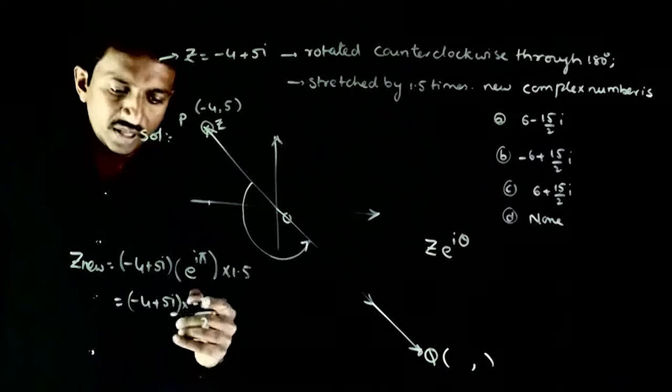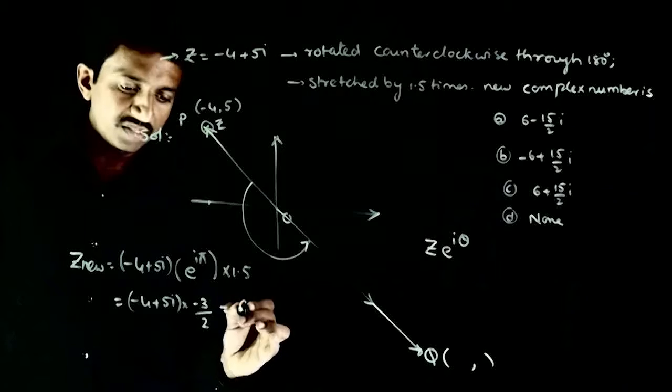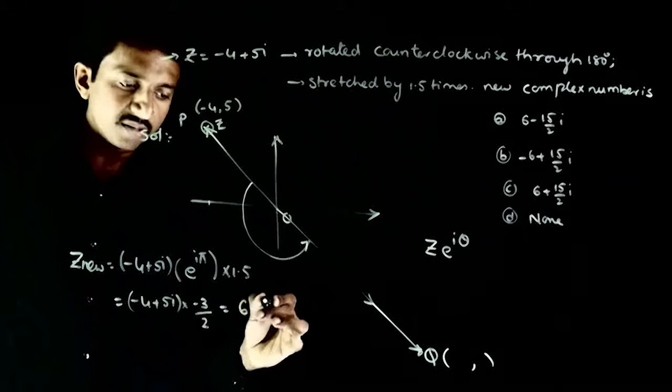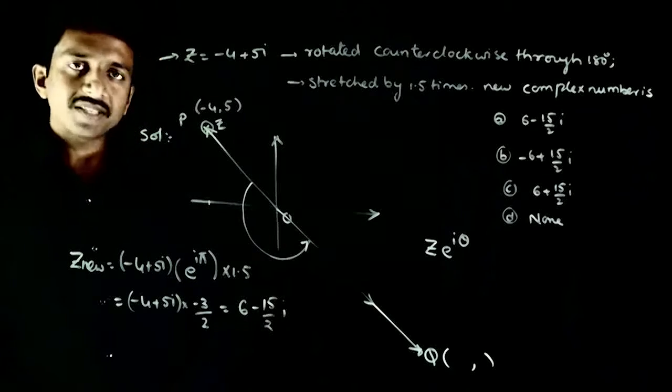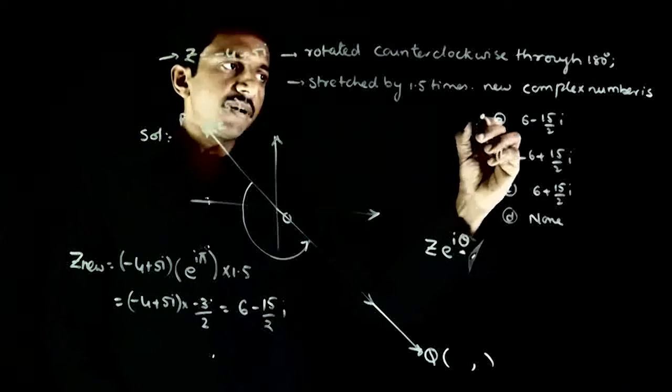So that is equal to 12/2, 6 minus 15/2i. So the new complex number will be 6 - (15/2)i.